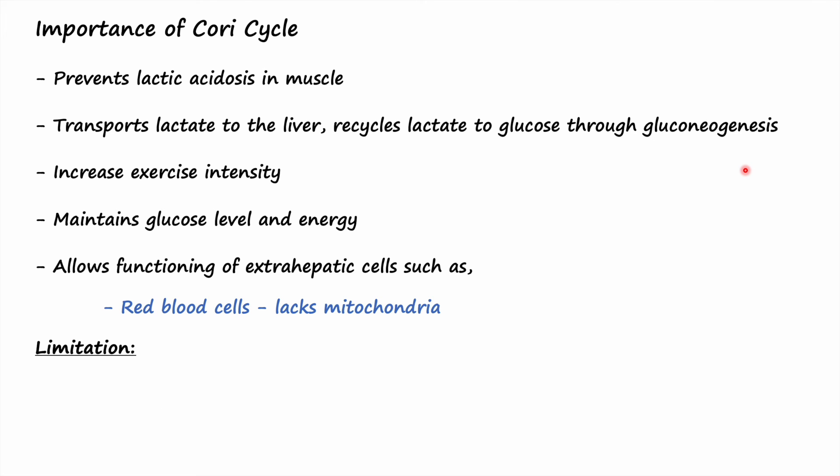There are also some limitations of the Cori cycle. First, it is not meant for long-term use because it is not as efficient as the usual energy processes like the Krebs cycle or oxidative phosphorylation, which synthesize 36 or 38 molecules of ATP. Second, it costs more energy — the Cori cycle consumes six molecules of ATP in total — so recycling of glucose through the Cori cycle cannot be sustained indefinitely.